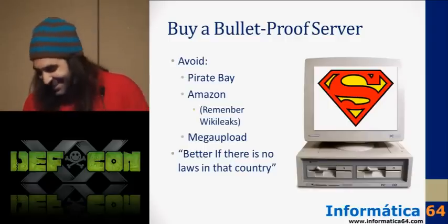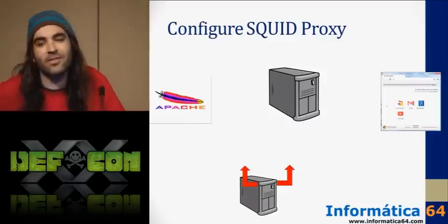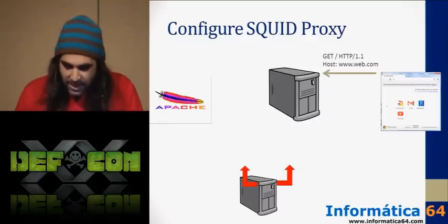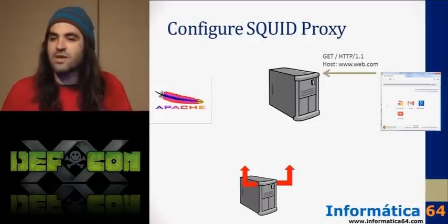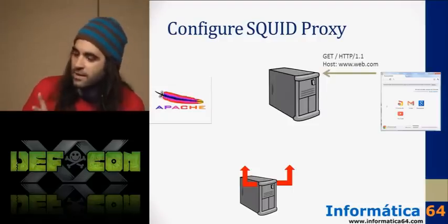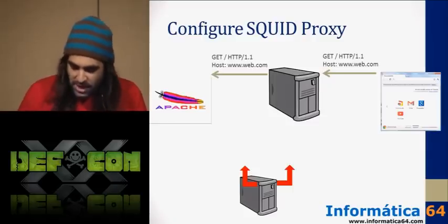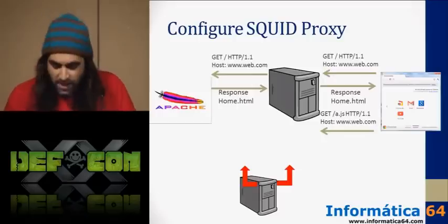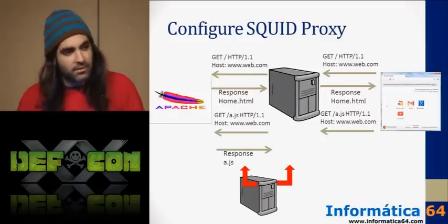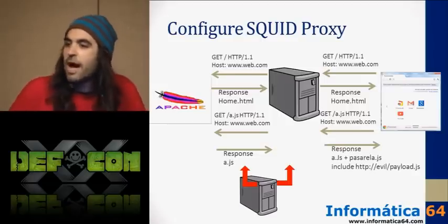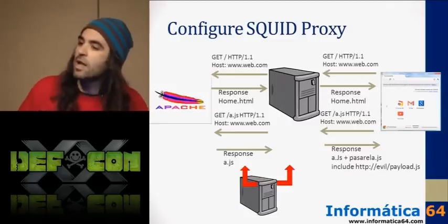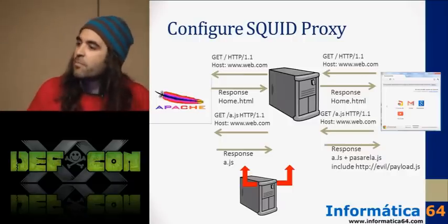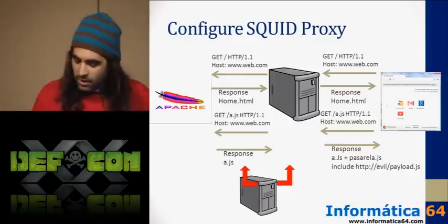Once you rent the server, you only need to configure Apache web server and Squid proxy. The idea is that with this server, we were going to infect all JavaScript files with just two lines of code. When the user connects through our proxy server, we go to the website, retrieve the original JavaScript file, and add only two lines to load the payload. We retrieve the file using wget, copy it into our filesystem, add our parasitic JavaScript, and send the new JavaScript to the client using Apache.